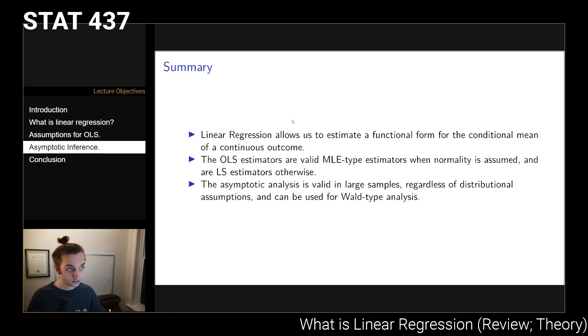So in conclusion, with linear regression we're looking at ways of modeling a continuous outcome with respect to covariates that might be of interest to us. We do this by specifying a linear form for the conditional mean, assuming constant variance, and assuming that all of the data are independent.